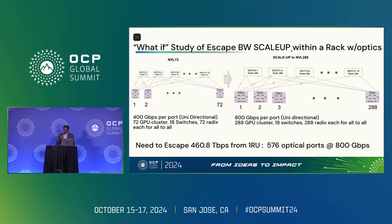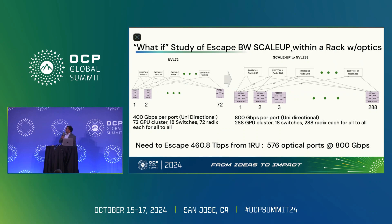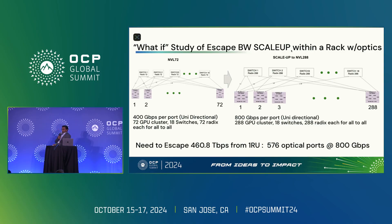All-to-all connectivity is taken for granted for these scale topologies. Today with NVL 72 you're looking at 400 gigabits per second per port, 72 GPUs, 18 switches each connecting 72 radix. For NVL 288 it's almost 800 gigabits per second per port connecting 288 GPUs. When you add up the bandwidth, it translates to 460 terabytes per second on a single rack unit — you need to escape out 460 terabytes per second, which is 576 optical ports at 800 Gbps.